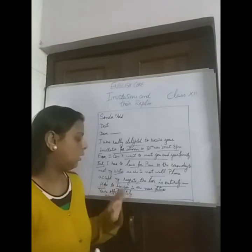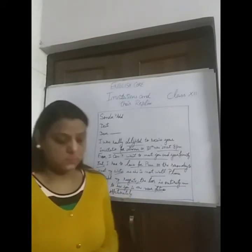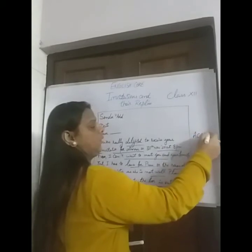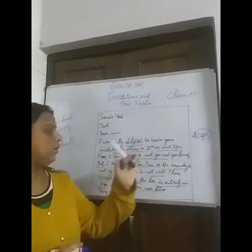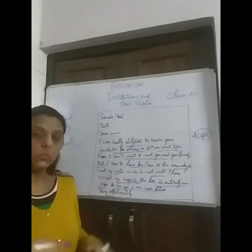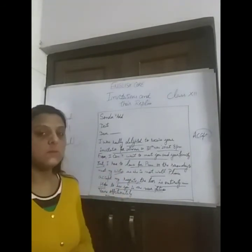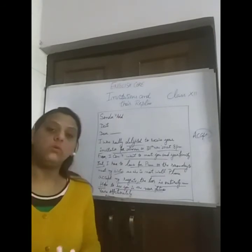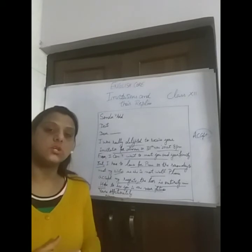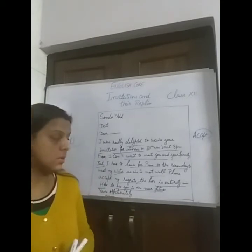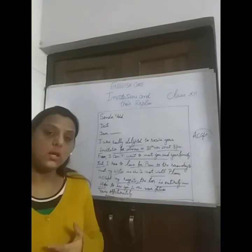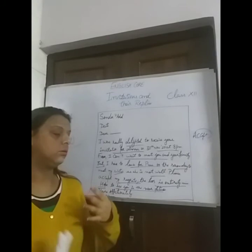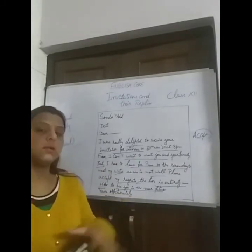If you are writing for acceptance, after saying 'I can't wait to meet you and your family,' you would write: 'Sure, I would really come to your place' or 'We should go somewhere to enjoy it, cherish our childhood memories, and introduce our families to each other.' In this manner you can write an acceptance reply.